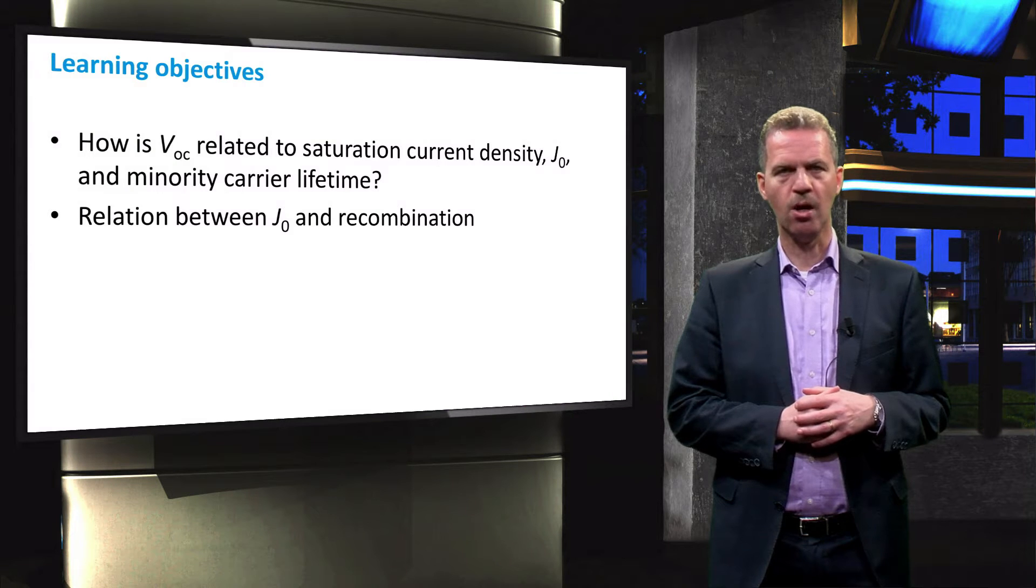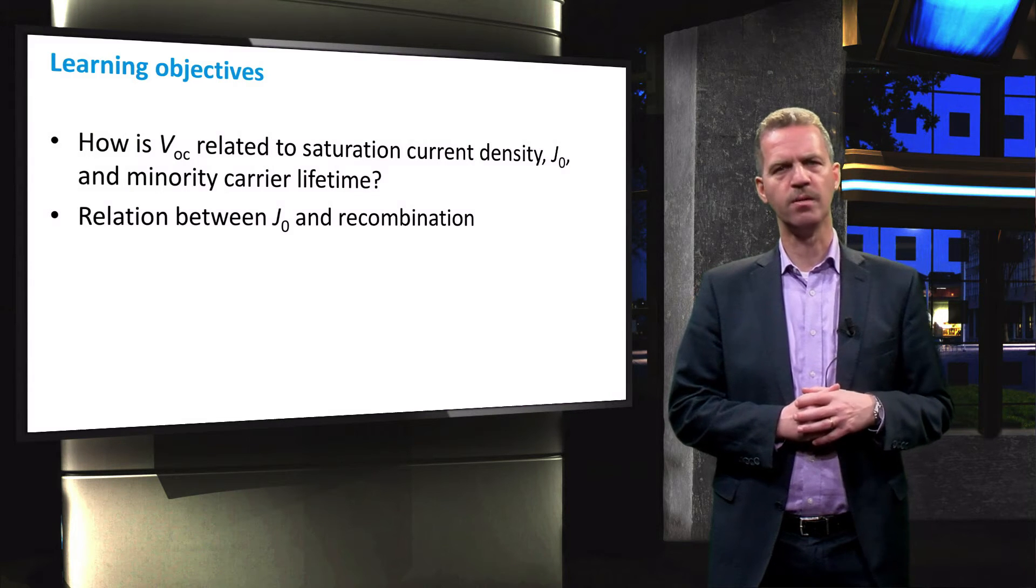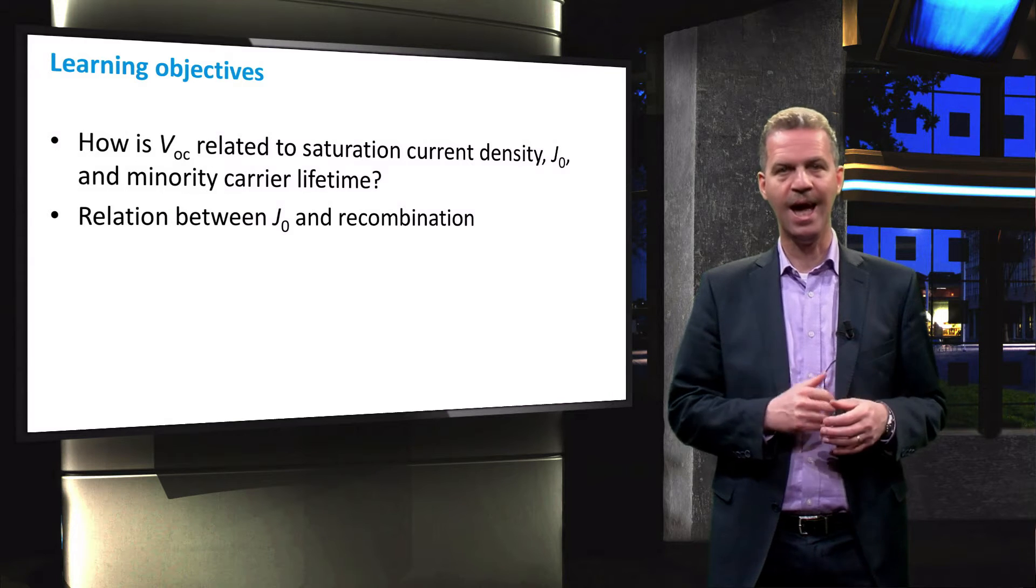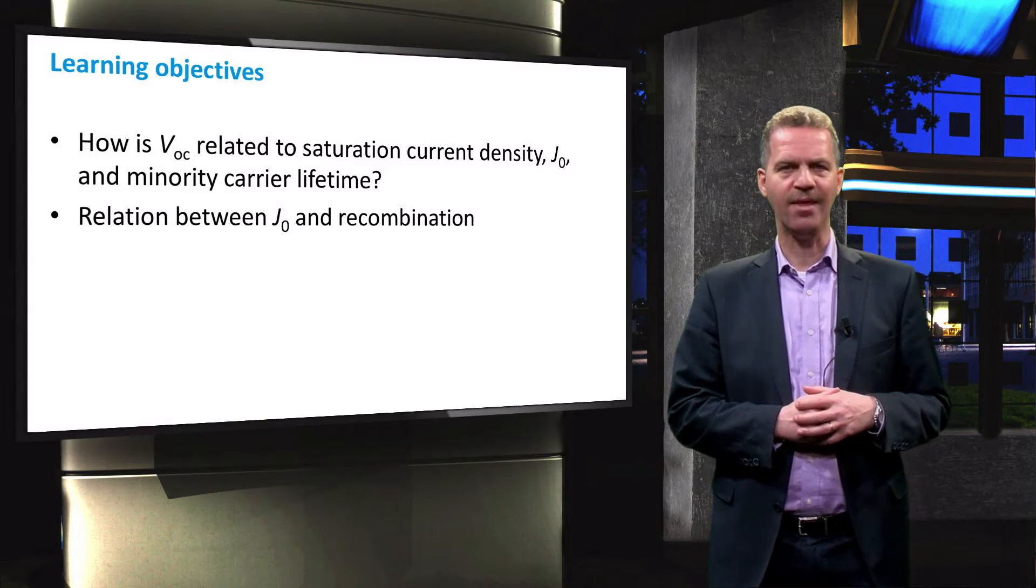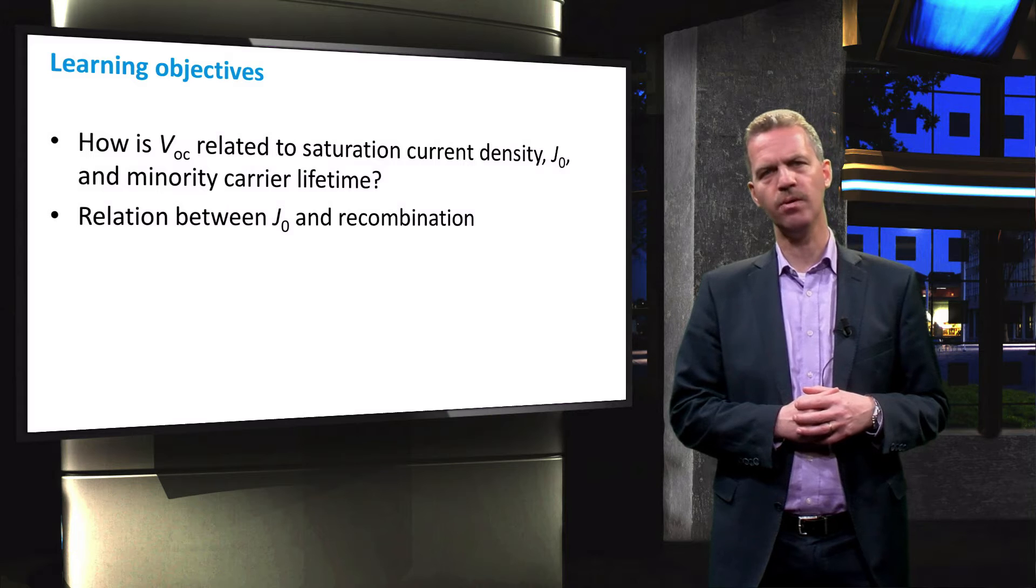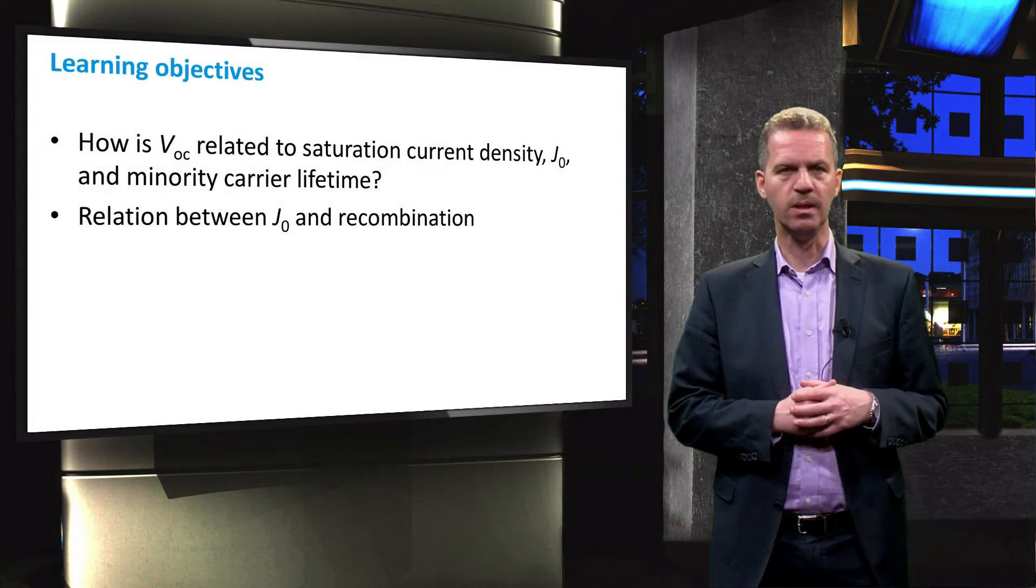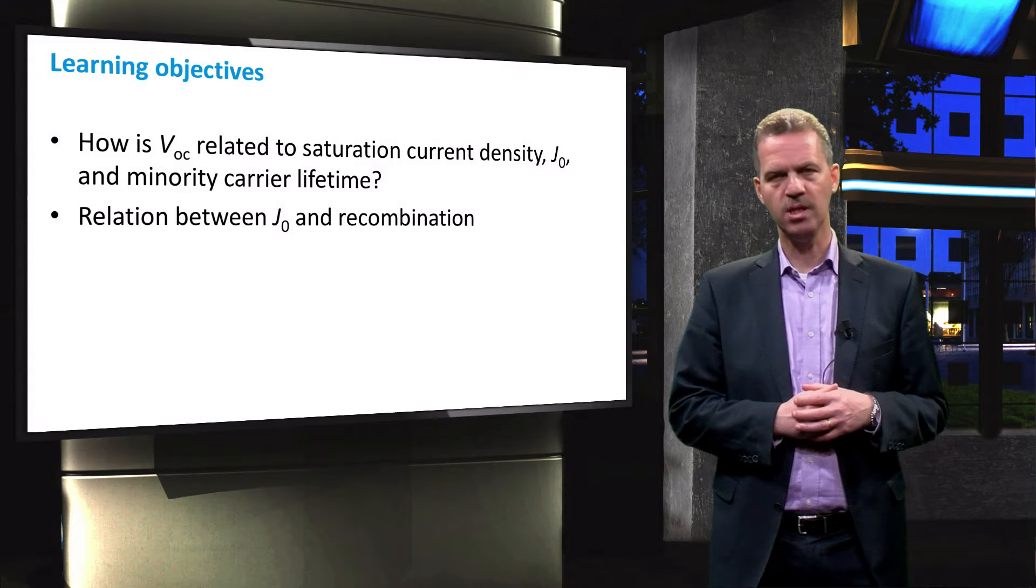The learning objectives are to first understand the relation between the open circuit voltage of a solar cell, VOC, and J0, and how this is related to the carrier lifetime. We then will define a relation between the recombination rate and J0.